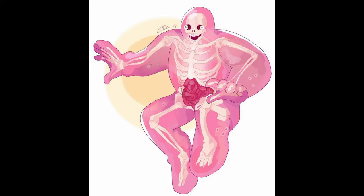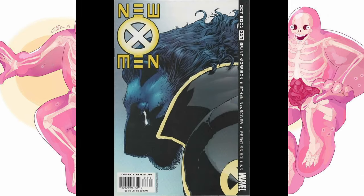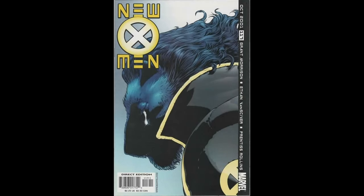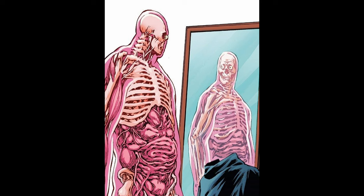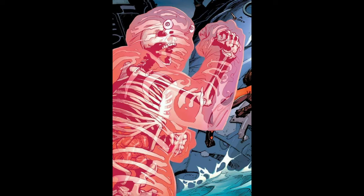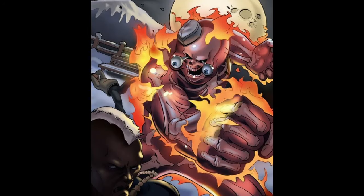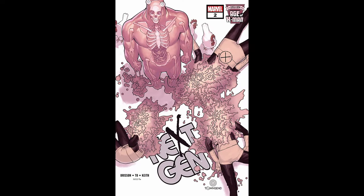Glob Herman first appeared in New X-Men issue 117 in 2001. His real name is Robert Herman, a mutant specifically associated with the X-Men. His distinctive appearance involves being composed of living and transparent wax, which allows his internal organs and skeleton to be visible. This unique physical composition sets him apart from many other mutants. Glob Herman's ability to light his waxy skin on fire and launch bits of himself at enemies adds an interesting and visually striking element to his character.